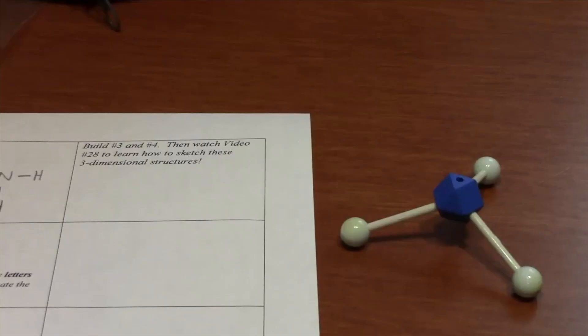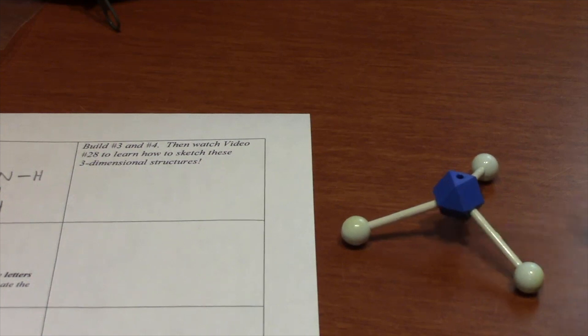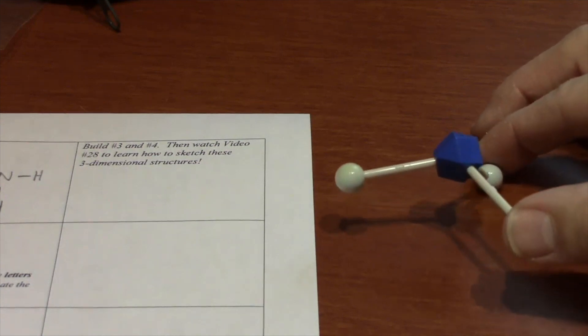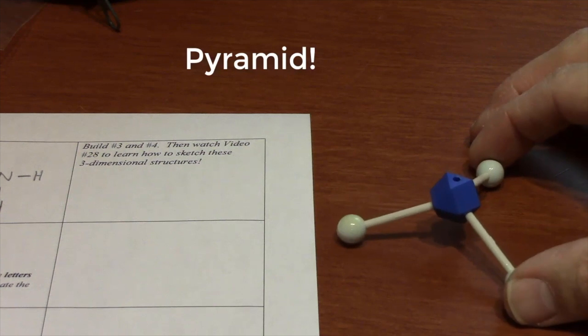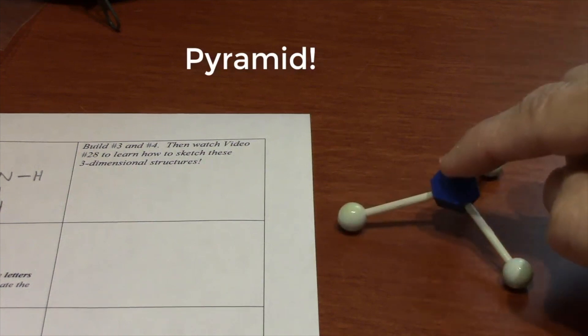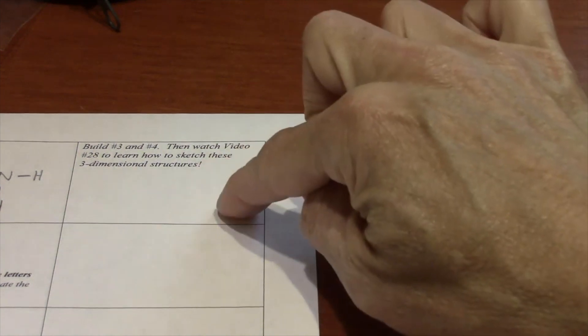This is the structure of the NH3 molecule. It's ammonia, found in cleaning products in your home. It's not flat. You can see I can put a pencil underneath without touching this central atom. This structure is called a pyramid.